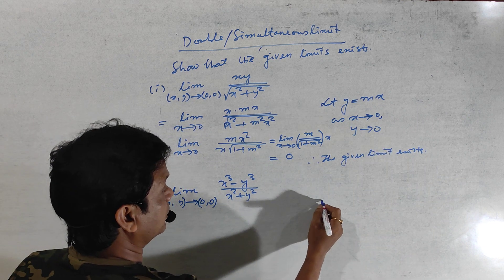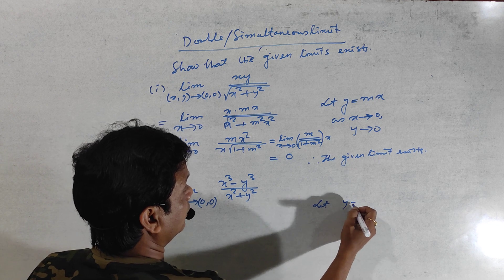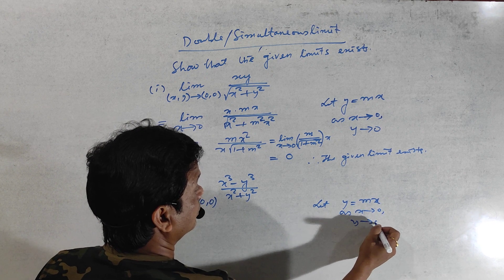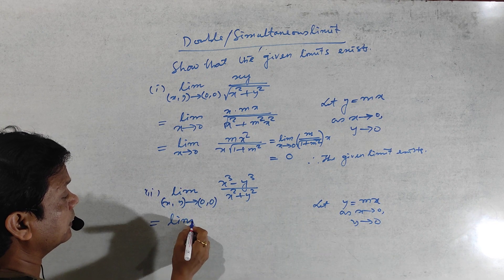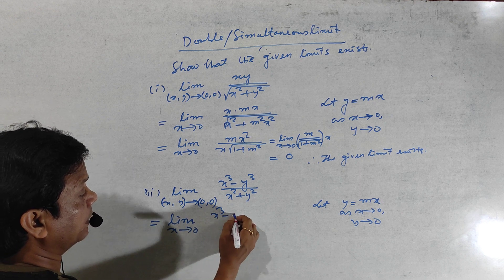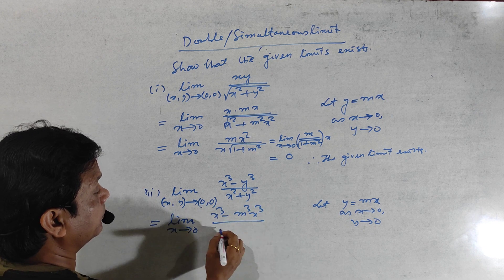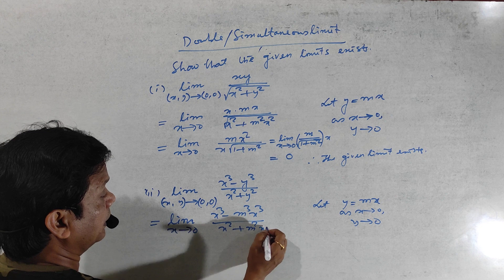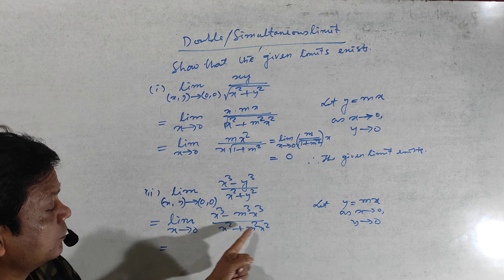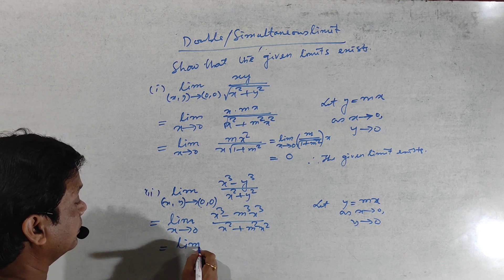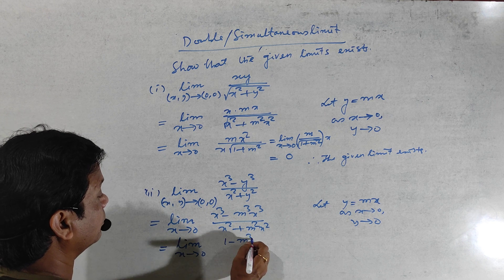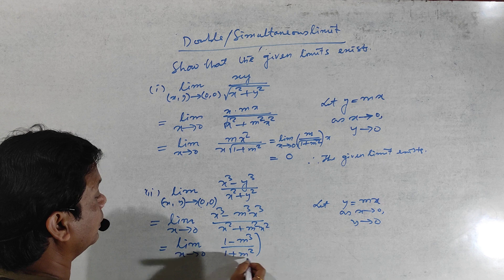Similarly, for the next problem, let y equal to x. So as x tends to zero, y tends to zero. Write the limit as x tends to zero of (x² minus x²) divided by (x² plus x²), then take x from the numerator and x² from the denominator. After cancelling, x remains in the numerator.